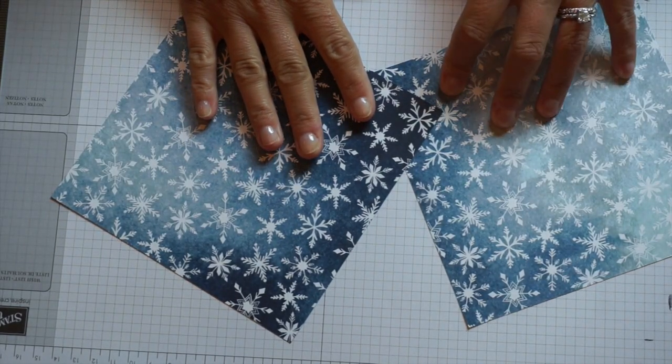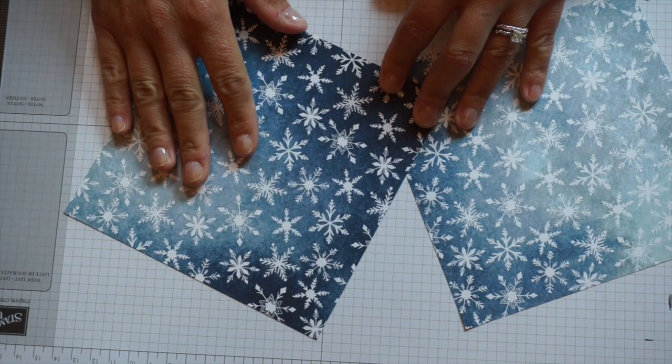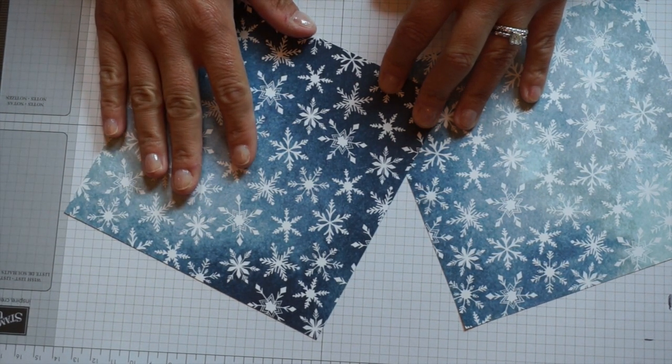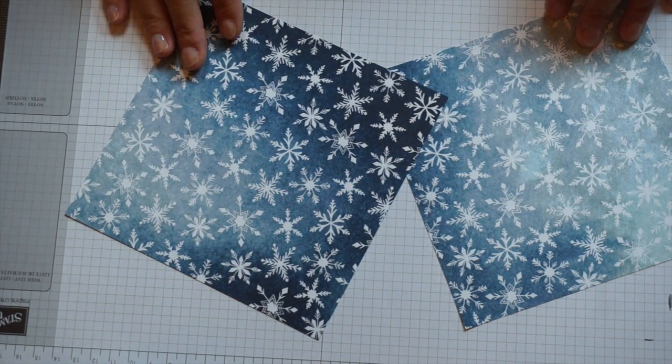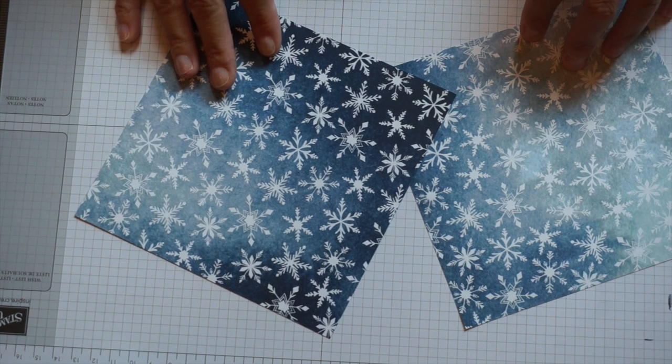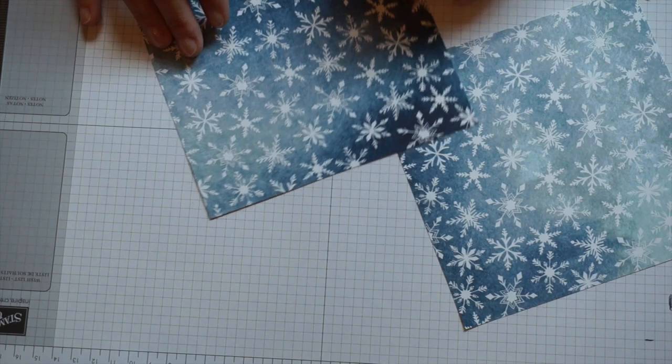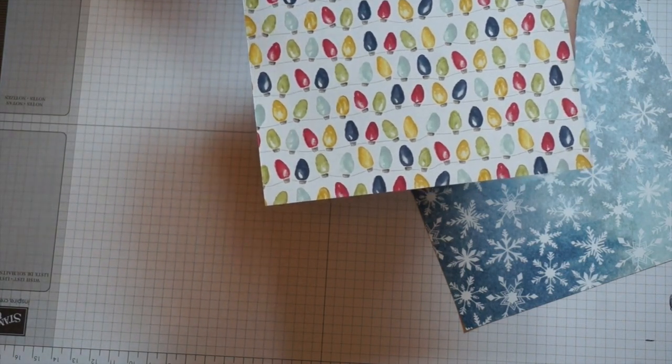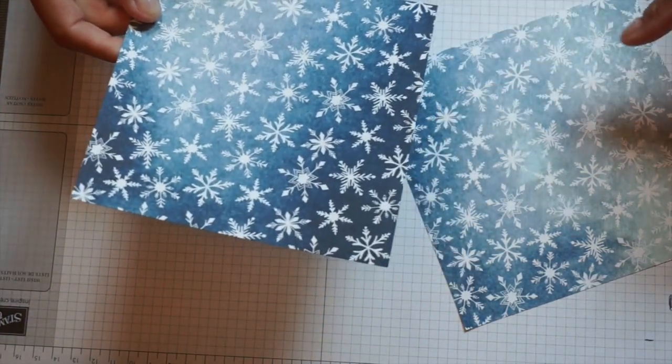For our project today we are going to be using this brand new sneak peek DSP that will be coming out in the upcoming holiday catalog. The holiday catalog will be available on September 1st, but for those of us that are demonstrators, one of the really great things is we get to not only see the catalog before anyone else but we also get to place pre-orders. We received this free paper at convention. This whole pack of papers has a very vintage feel and they're really very nice.